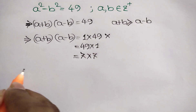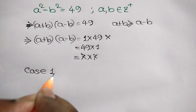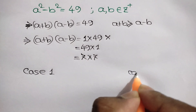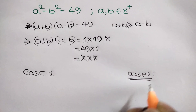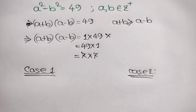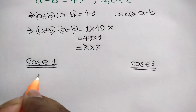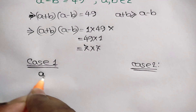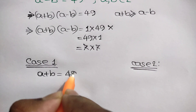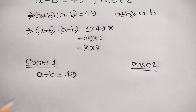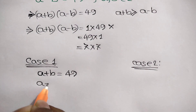Case 1: we write a plus b is equal to 49, and a minus b is equal to 1.